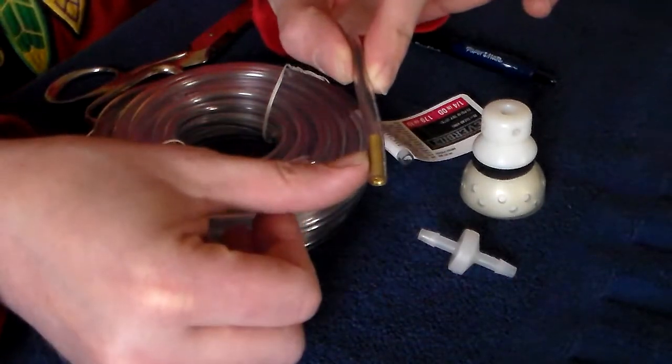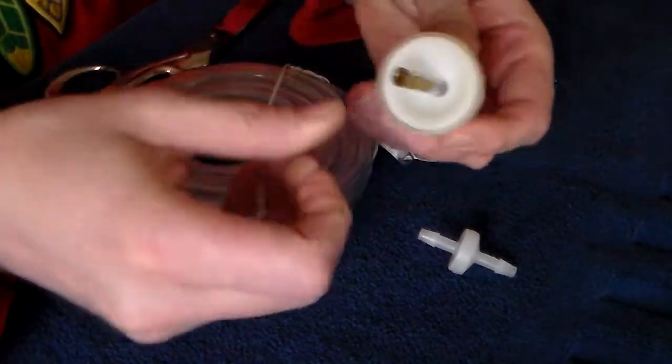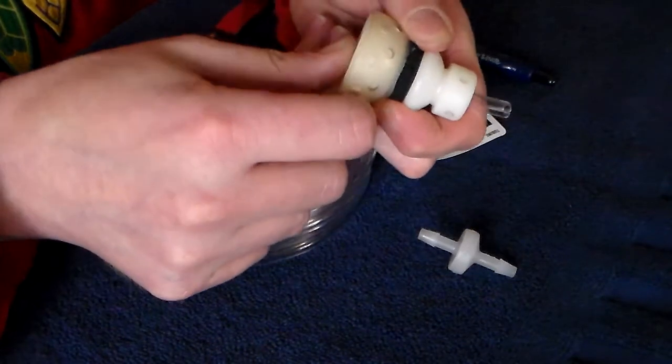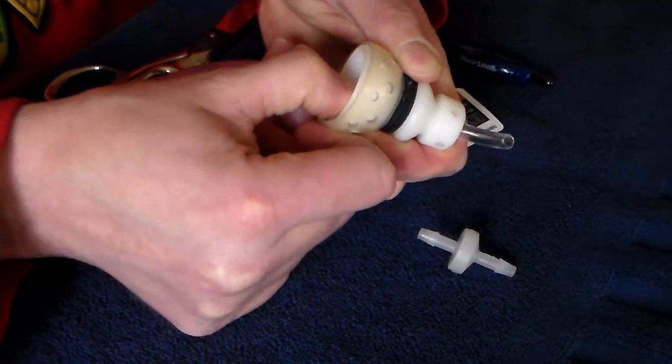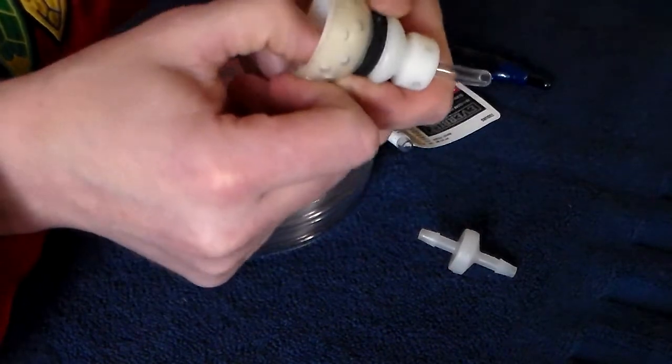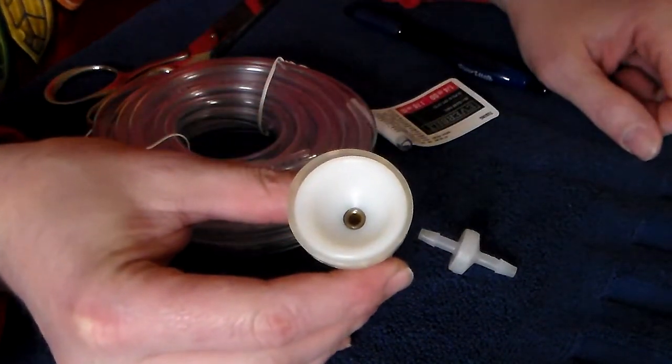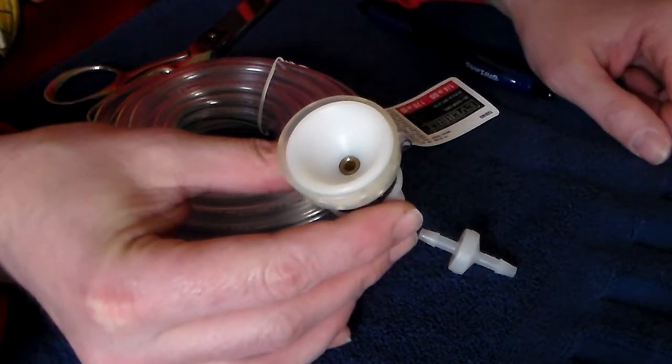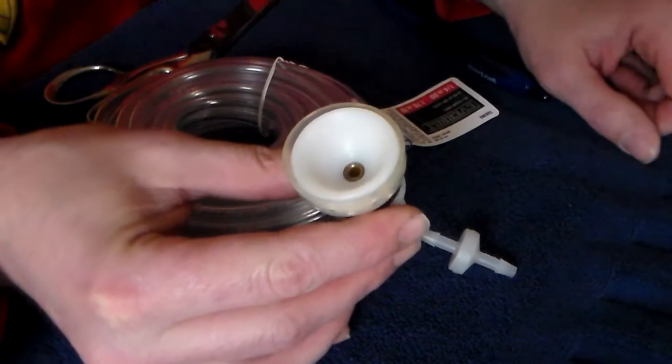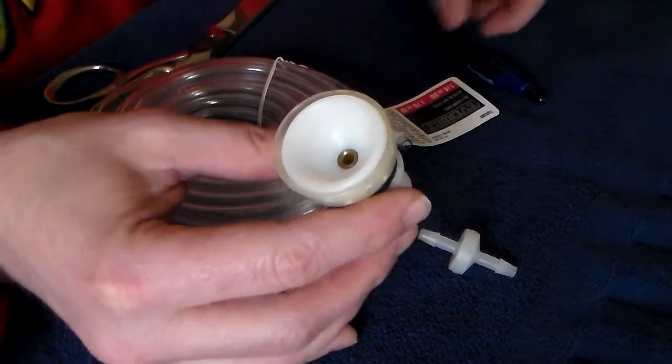Once you have your ferrule fitting installed in your tubing, you'll run the tubing through the base of the bell and you'll feel when you get to the flare of that ferrule fitting that it will start to grip inside because that ferrule fitting will expand your tubing slightly and then provide your seal.